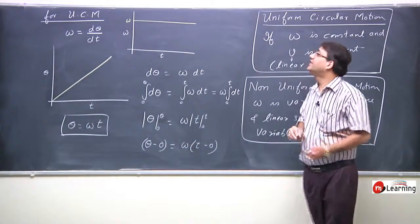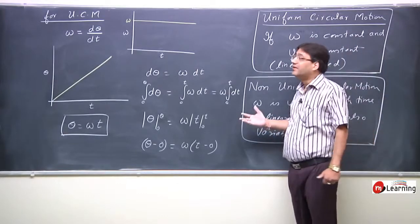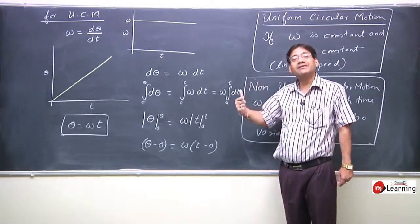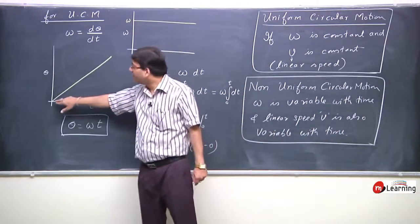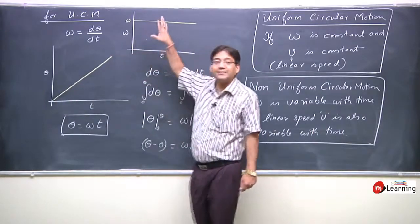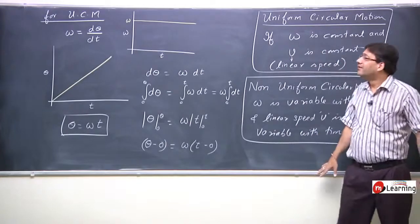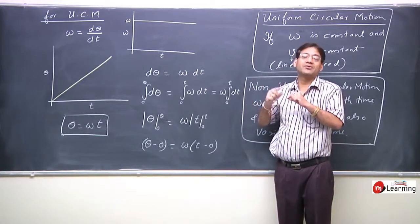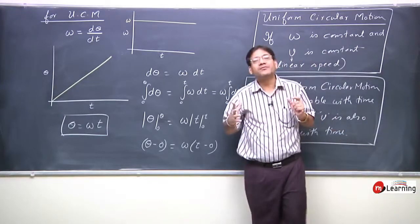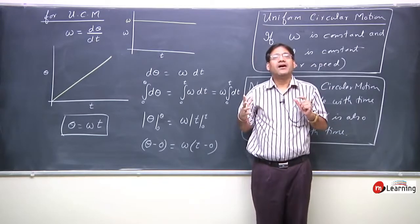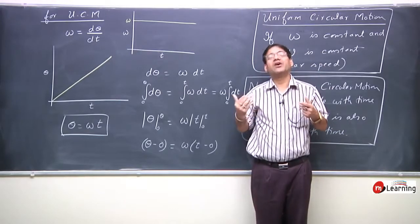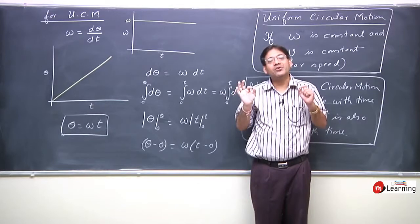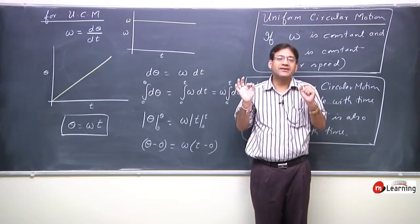This is for Uniform Circular Motion — वहाँ पर angular displacement particle का बढ़ता ही चला जाएगा time के साथ linearly. Initially वहाँ 0 है, linearly इस तरह से increase होता ही जा रहा है। Omega constant है, linear speed constant है — इस तरह की Uniform Circular Motion एक fan जो काफी लंबे समय से on है और जो अभी आपके सर के ऊपर घूम रहा है, उसको आप Uniform Circular Motion कहोगे।